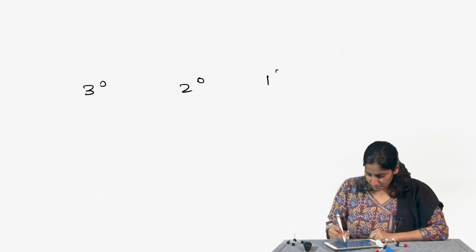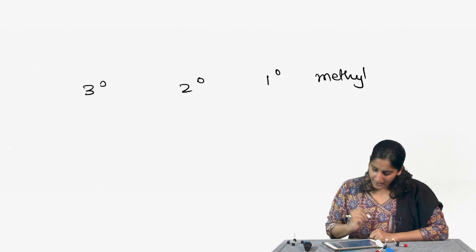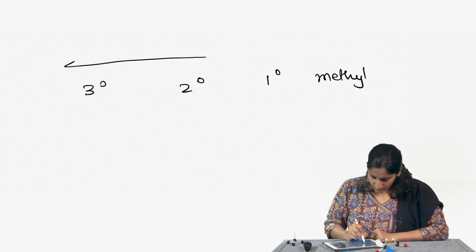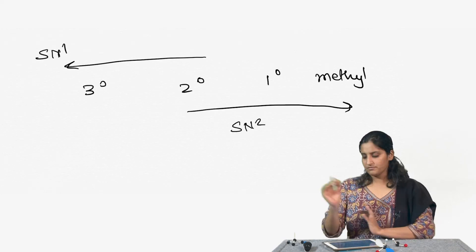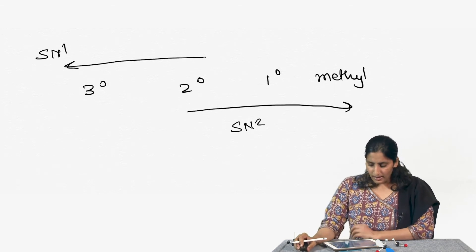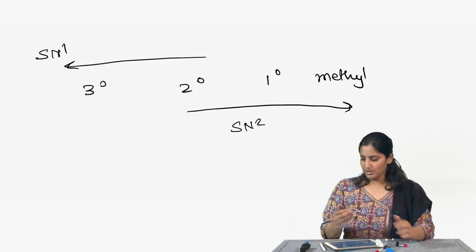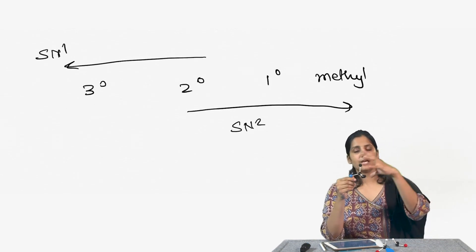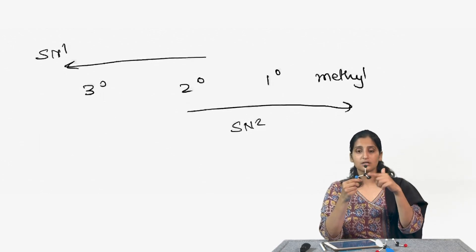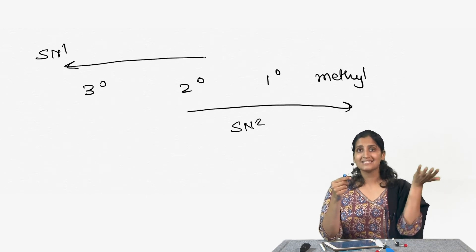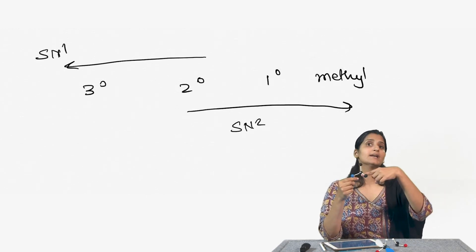To summarize: for tertiary, secondary, primary, and methyl alkyl halides, the rate of SN1 goes on increasing toward tertiary, but the rate of SN2 goes on increasing toward methyl. This is because the incoming nucleophile facing many alkyl groups cannot approach that carbon centre, whereas if those substituents are hydrogens, it is much easier for the nucleophile to find that centre to attack.